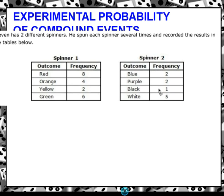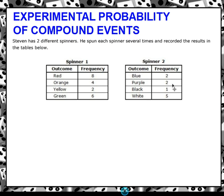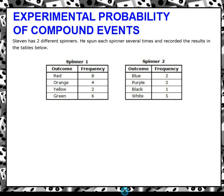This is pretty much very similar to the other. This person's name is Steven, and he has two different spinners. You can see spinner one here and spinner two here. He spun each spinner several times and recorded the results in the tables below. Spinner one: red, orange, yellow, green happened eight, four, two, and six times. On the second spinner, blue happened twice, purple twice, black once, and white five times.